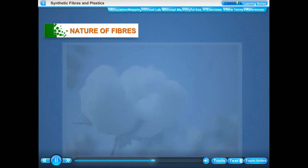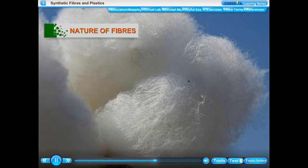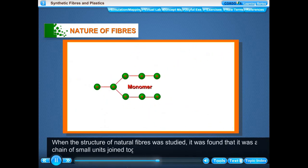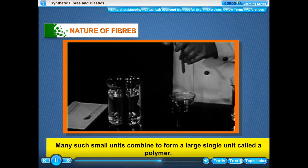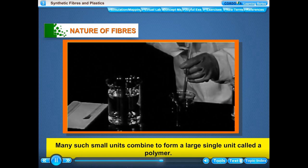Nature of Fibers: When the structure of natural fibers was studied, it was found that it was a chain of small units joined together. Each small unit is actually a natural substance. Many such small units combine to form a large single unit called a polymer.